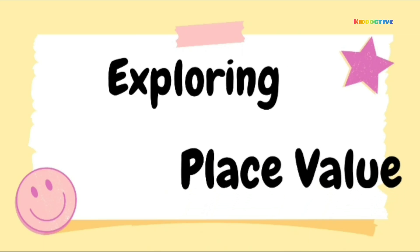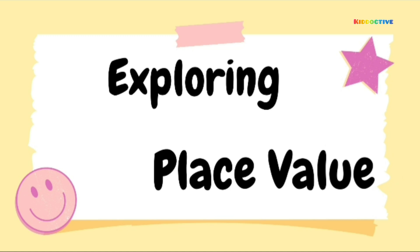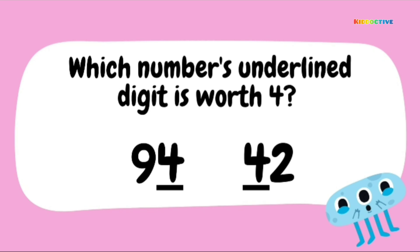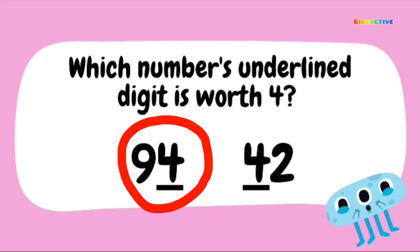Today we are going to explore place value. Now tell me, which digit is in the 1's place? The answer is 2. Which underlined digit is worth 4? There are numbers 94 and 42. Yes, it is 94.